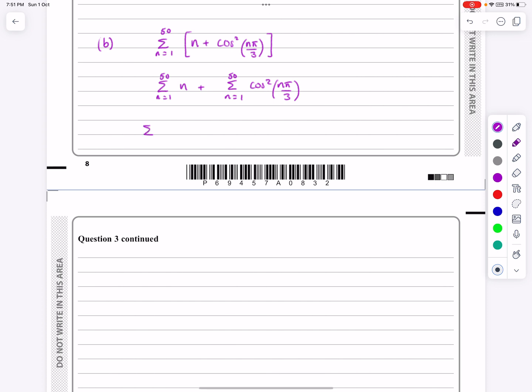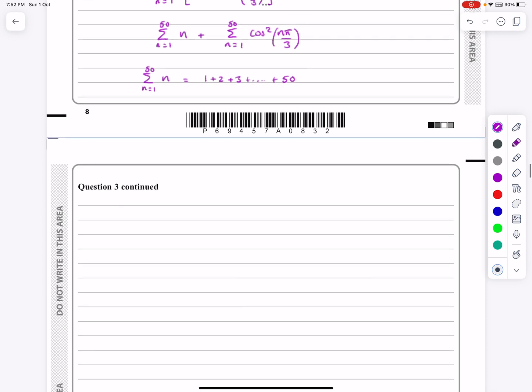So if I do the sum of n equals 1 to 50 of n, what that means is 1 plus 2 plus 3 plus dot dot dot going all the way up to 50. Well, that's okay, I can just treat that as an arithmetic progression, and let's work out that one. If I want to do that, then this is simply an arithmetic series here. a is equal to 1, d is equal to 1, n is equal to 50. And if I want the sum of those first 50 terms, remember, s n is equal to n over 2, 2a plus n minus 1, d.